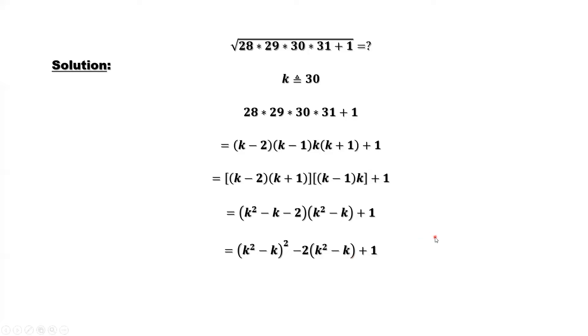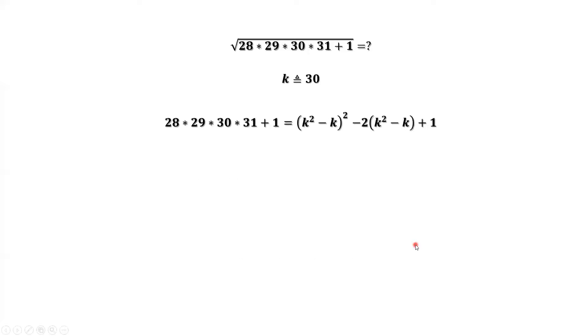Continue to simplify. If we consider that this is one variable x, then this is x square minus 2x plus 1. This is the complete square. This is k square minus k. That's x minus 1 square.